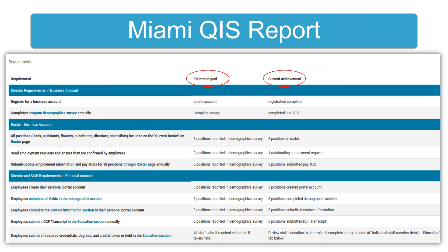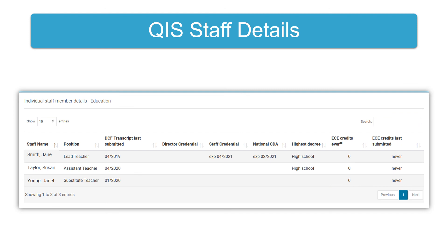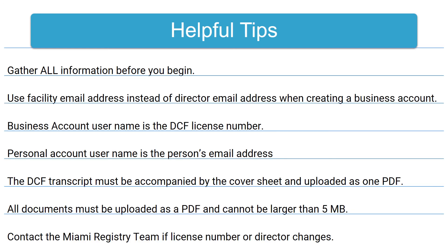If the numbers do not match your records, first be sure the number of positions entered on the demographic survey and employee information entered on the roster are both accurate. If those data are accurate, directors may need to follow up with employees to ensure they have created accounts, confirmed employment, and submitted DCF transcripts and other education documents. On the bottom of the report are staff details for education documents submitted by directors and employees. If there is education missing from this report for any employees, the director should follow up with the employees to ensure they submit the missing documents on the education tab within their personal account.